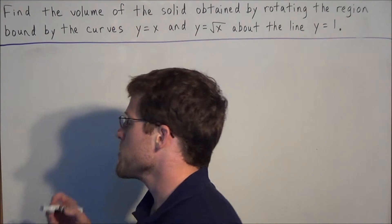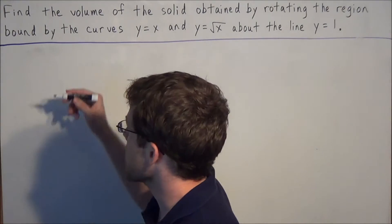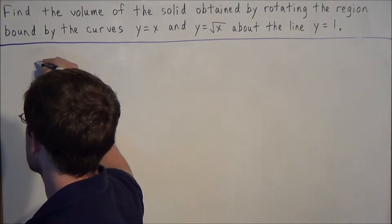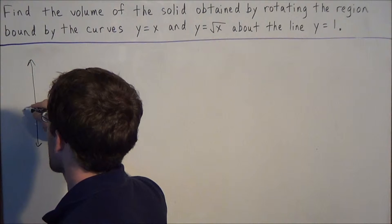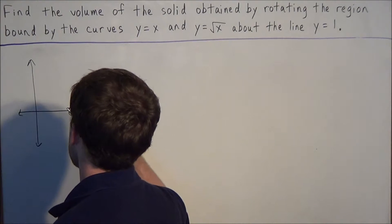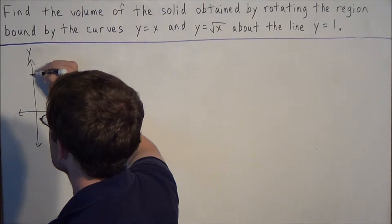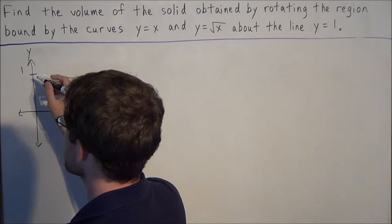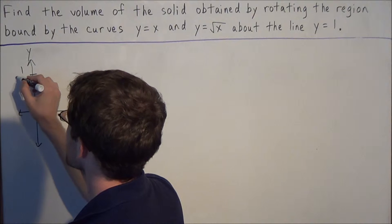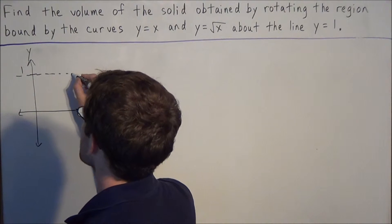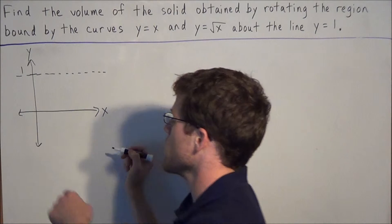For problems of this type, it's of vital importance that you get a picture of what's going on. So we need to get a sketch of the two equations that we started with. The task here is we're going to be rotating about the line y equals 1, which is a horizontal line that passes through the y axis at 1.